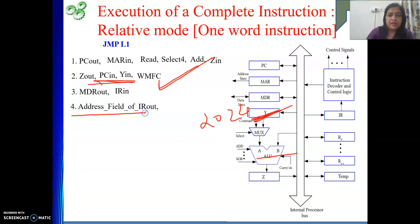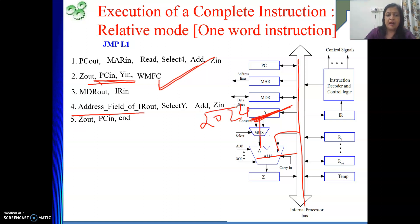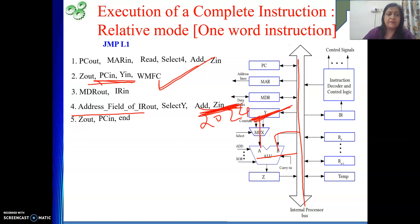The address field of IR out will be placed on the bus — that is the B input. PC's content is in the Y register, which feeds the A input of the ALU. So: select Y, then add, then Z in. The Z in step is there. After Z in, the updated value — the target address — is in the Z register. Now we give it to PC: Z out, PC in, end. See here — we have given a new value into PC by executing this instruction without checking any condition.